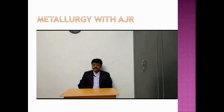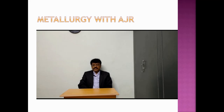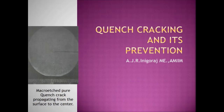Welcome to Metallurgy with AJR — small concepts in an easy and simple approach. Here I'm going to discuss about quench cracking and its prevention. Normally, quench cracking occurs during conventional quenching, that is quenching from the austenitizing temperature to a lower temperature with very high drastic cooling rates of around 150 degrees centigrade per second. Distortion and sometimes even quench cracking can take place, so we need to prevent this.